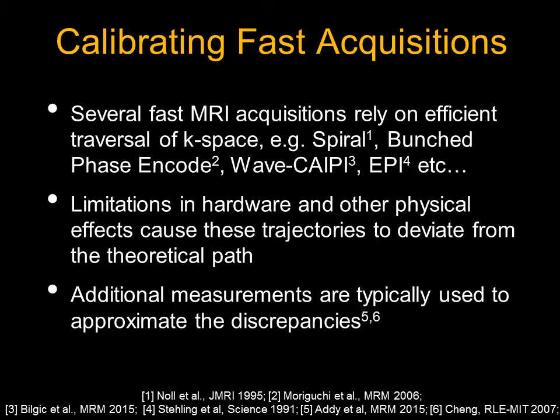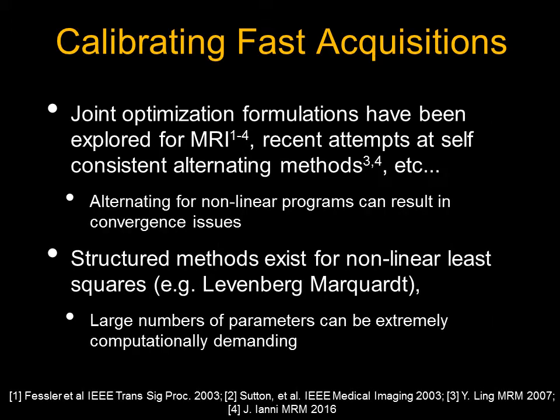There are several fast MRI acquisition techniques which rely on efficient traversal of K-Space. Limitations in hardware and other physical effects can cause these trajectories to deviate from their theoretical path. Typically, additional measurements are used to approximate these discrepancies and improve image quality. Alternatively, people have looked at alternating between optimizing trajectory-related variables and parallel imaging, and there are standard methods for solving nonlinear least squares problems, though they can be computationally demanding.